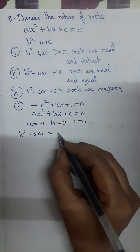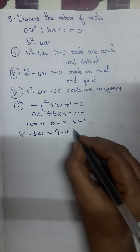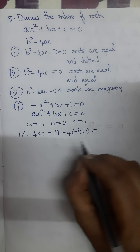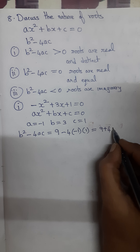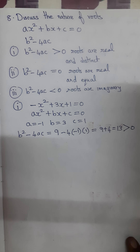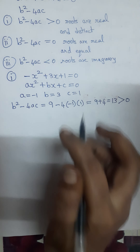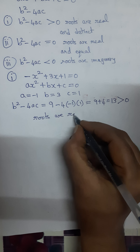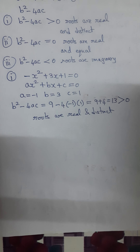b² means 3² = 9, minus 4 into a which is -1, into c which is 1. So we have 9 + 4 = 13, and 13 is greater than 0. Since it is a positive number greater than 0, the roots are real and distinct. This concludes the first subdivision.